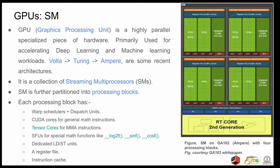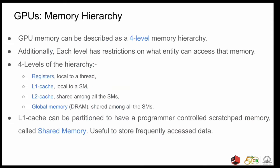The memory hierarchy on the GPU can be abstracted into a four-level hierarchy with restrictions on what entity can access what level of the memory. These levels are divided as follows. First, we have the registers which are local to a thread. We have the L1 cache which is local to an SM. We have the L2 cache which is shared among all the SMs. And finally, the slowest global memory which is also shared among all the SMs. The L1 cache can be partitioned to have a programmer controlled scratchpad memory which is called shared memory and is quite useful to store frequently accessed data.